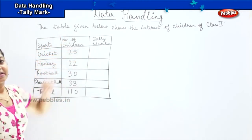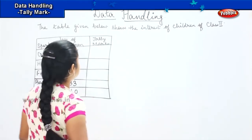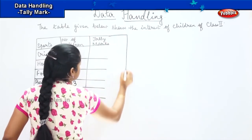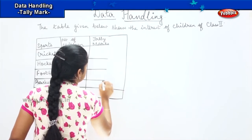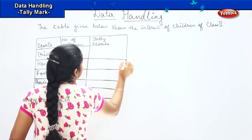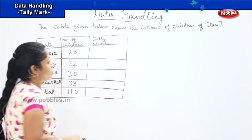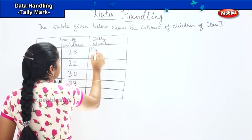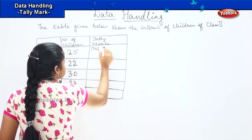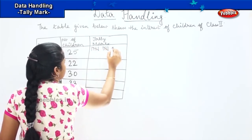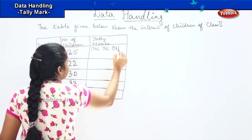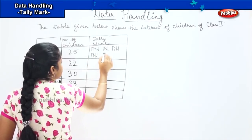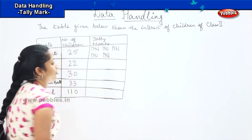Now I am going to represent the same data in tally marks. For cricket, which is 25, I draw: 1, 2, 3, 4, slanting 5, 6, 7, 8, 9, slanting 10, 11, 12, 13, 14, slanting 15, 16, 17, 18, 19, slanting 20, 21, 22, 23, 24, and 25. Is it clear?